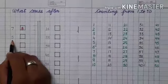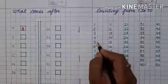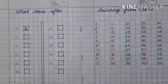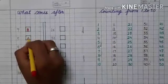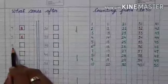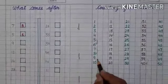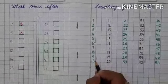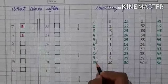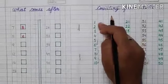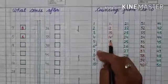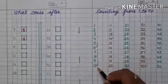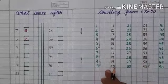Next number is five. See again in the counting — which number comes after five? Six. Now you have to write six in the box. Next number is nine. What comes after nine? Ten. You have to take the next numbers — after numbers means the next numbers. Write ten in the box.